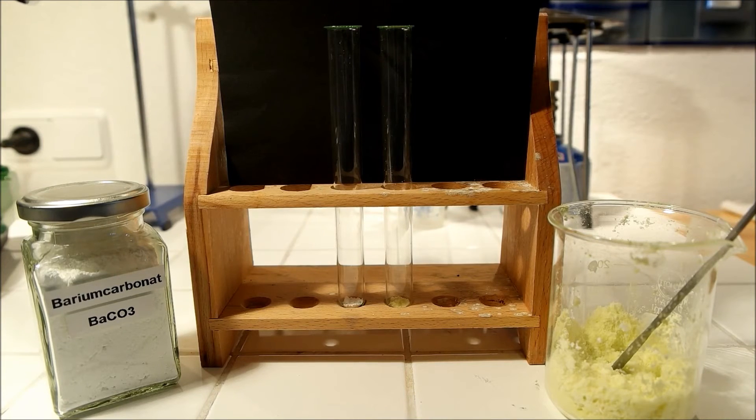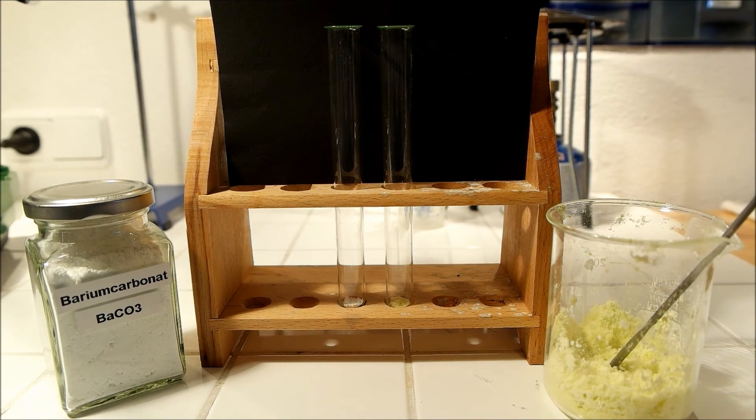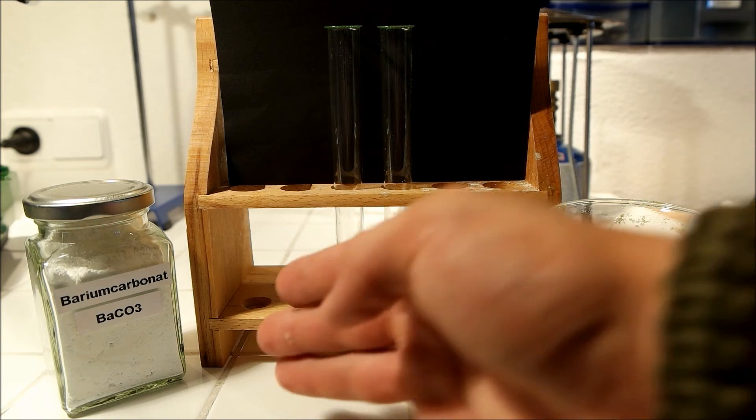Now I want to show you that the physical properties of the two salts, barium carbonate and barium chloride, are very different. Both salts have the same cation, which is barium, but the anion is different. Here it's carbonate, here it's chloride.